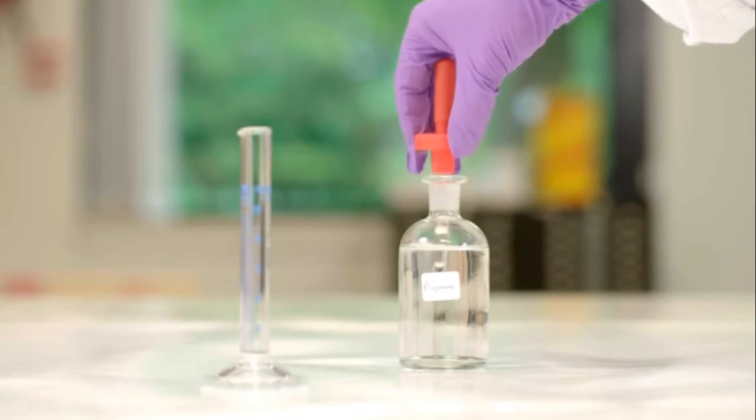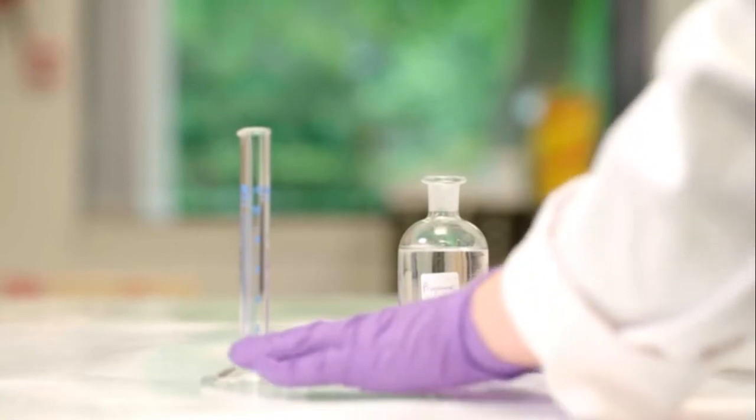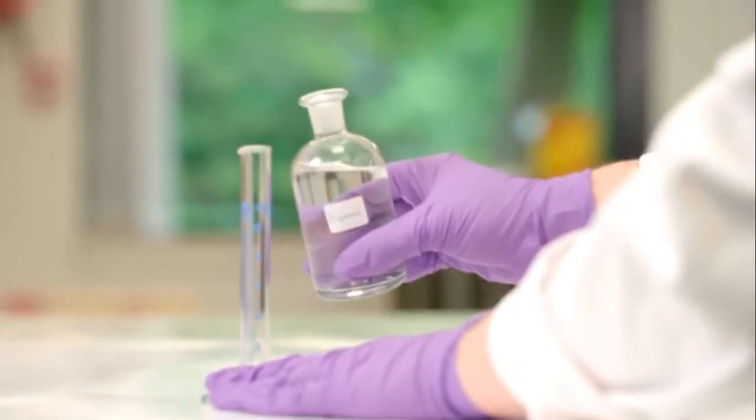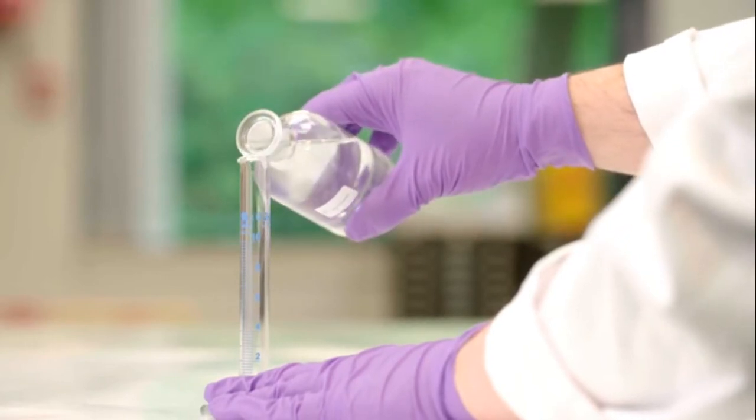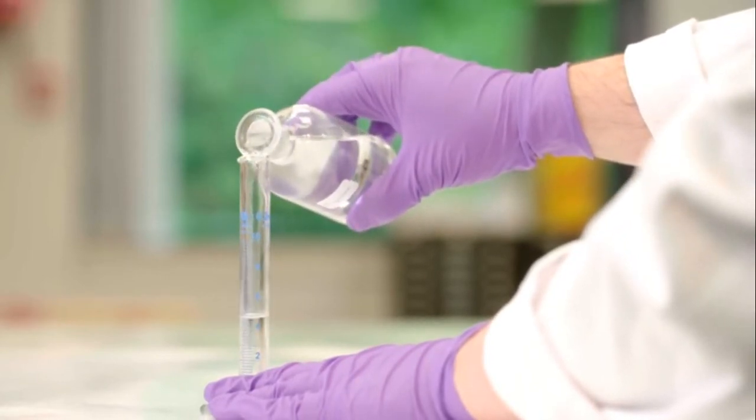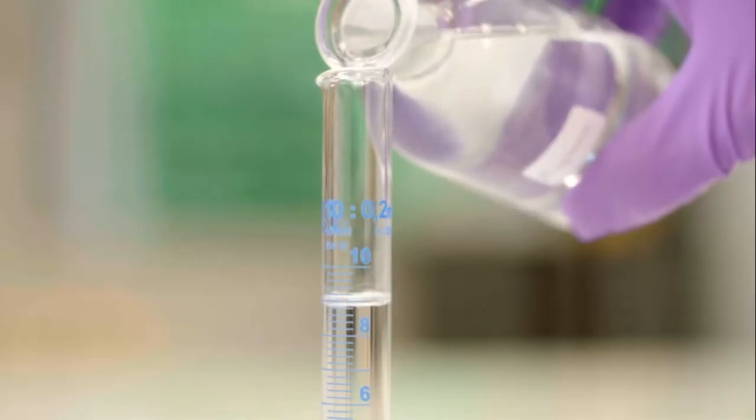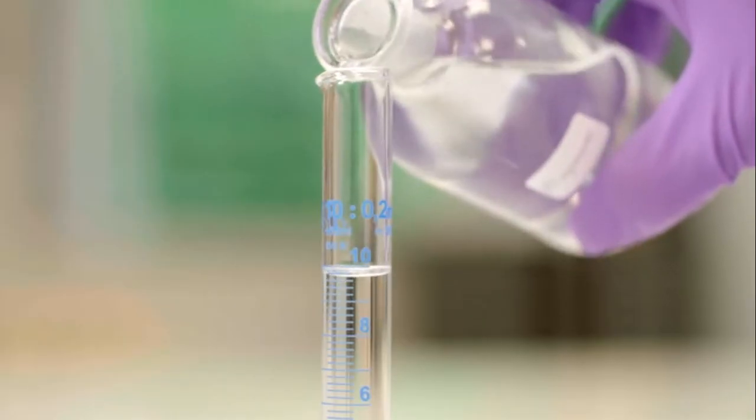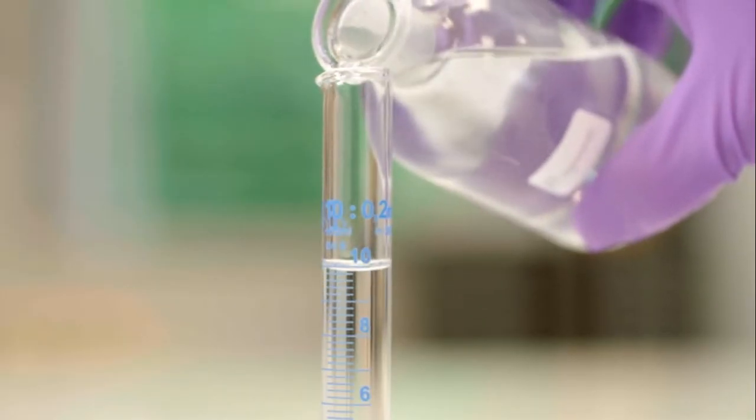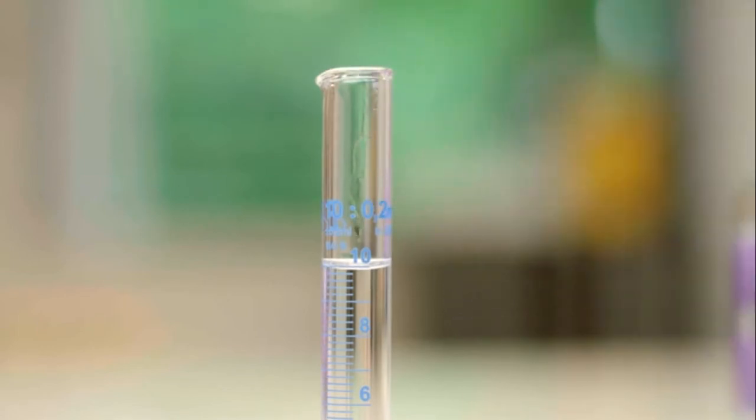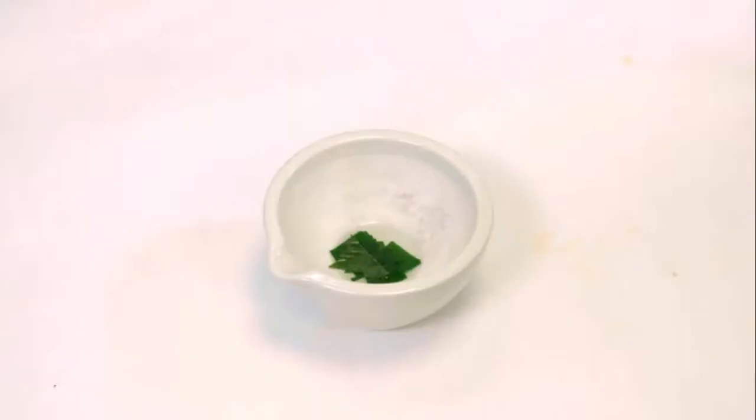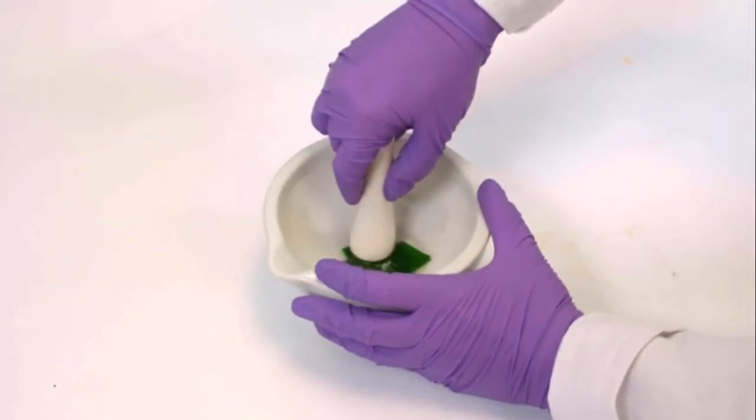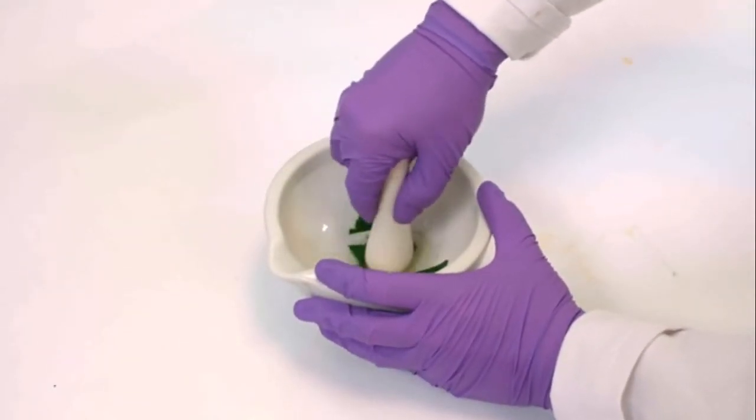10cm³ of propanone is measured out using the measuring cylinder and is then added to the mortar. The mixture is ground with the pestle for at least 2 minutes.